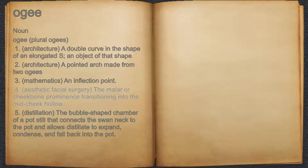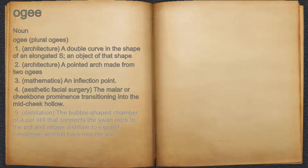4. Aesthetic facial surgery: the malar or cheekbone prominence transitioning into the mid-cheek hollow. 5. Distillation: the bubble-shaped chamber of a pot still that connects the swan neck to the pot and allows distillate to expand, condense, and fall back into the pot.